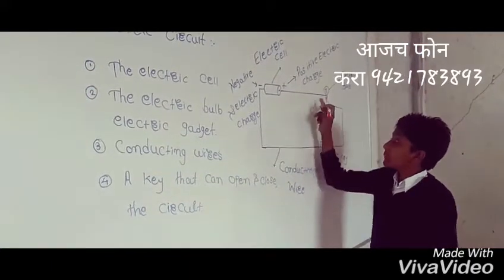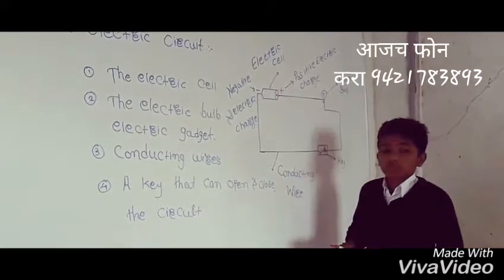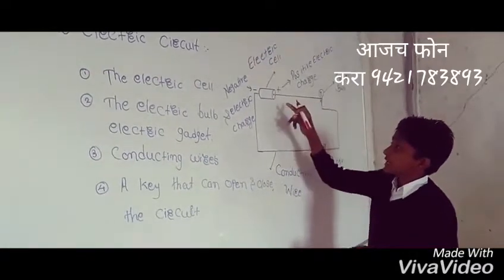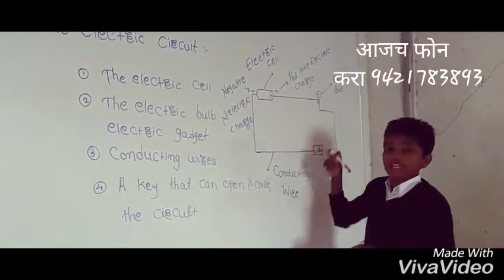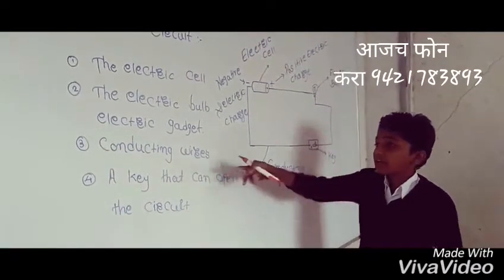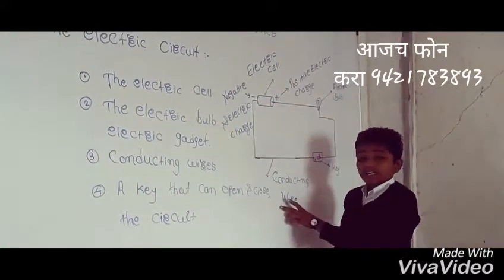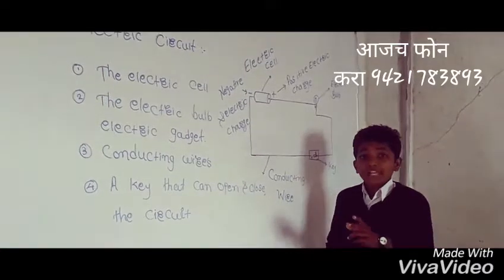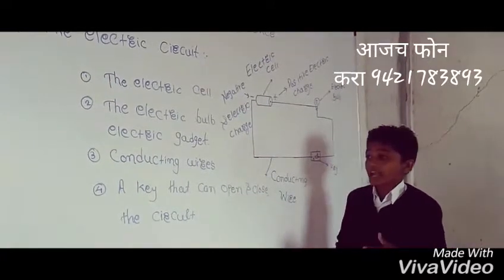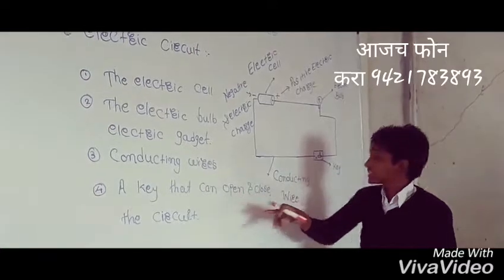Second, we study the electric bulb. When the positive charges and negative charges come to the bulb, the bulb lights up. And when the positive and negative electric charges cannot come to the bulb, the bulb will not light up. Third point: the conducting wire. The conducting wire is the wire that can pass electricity.